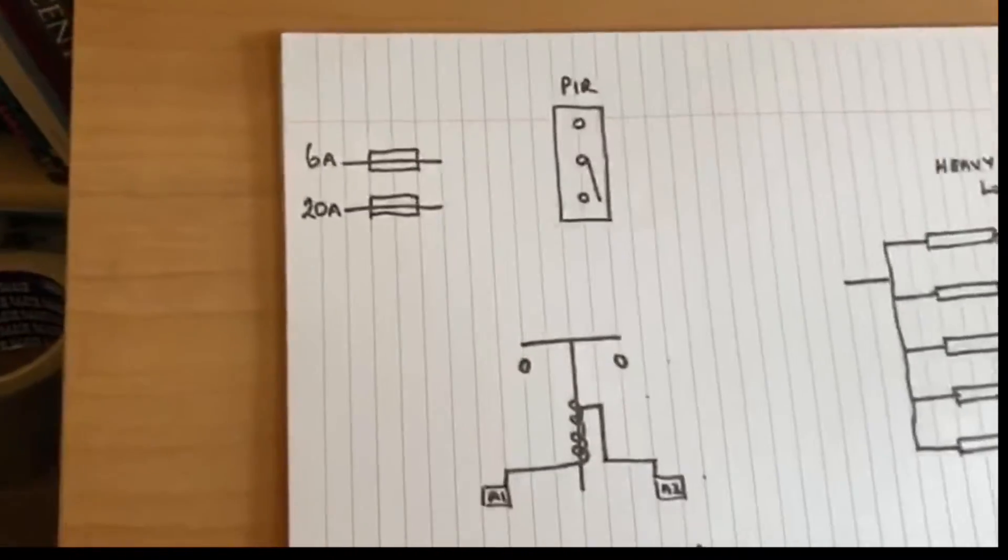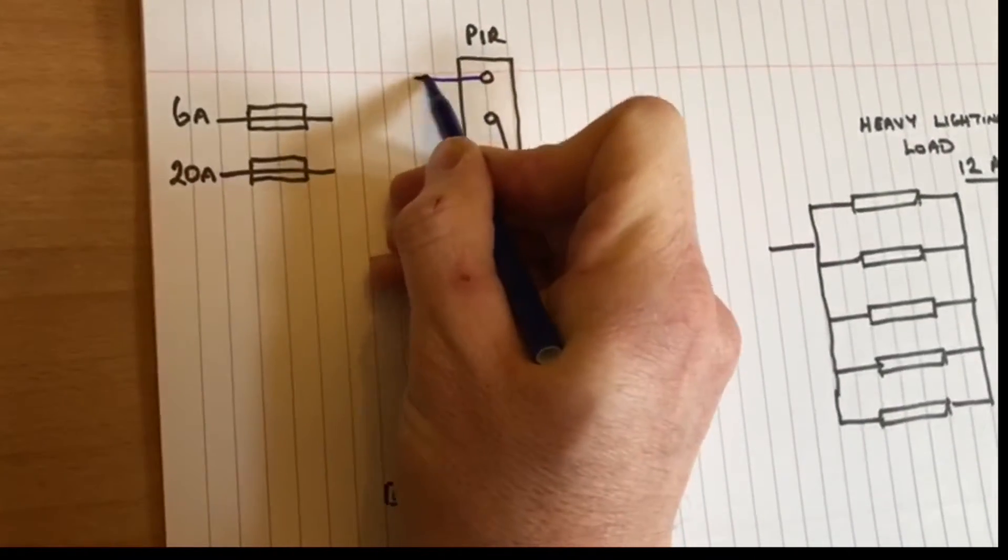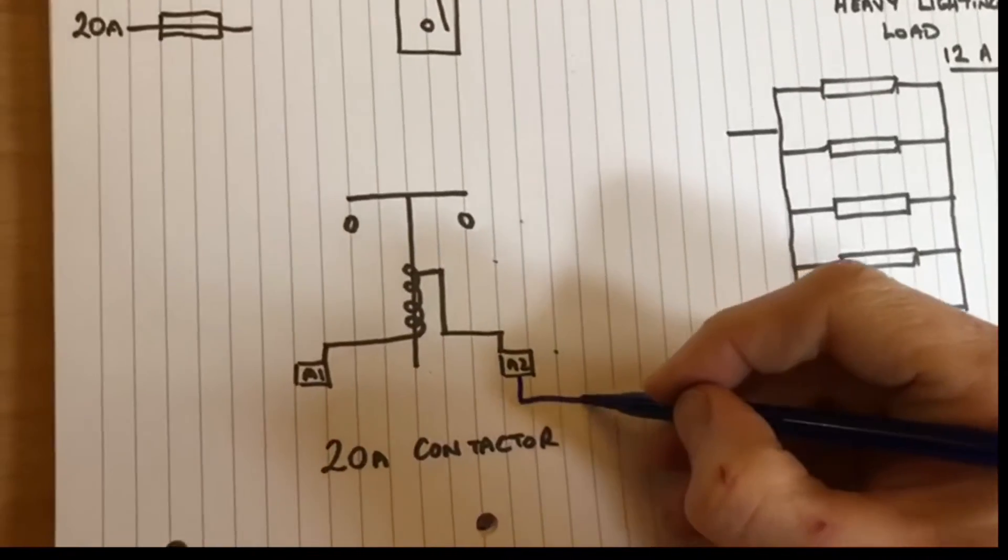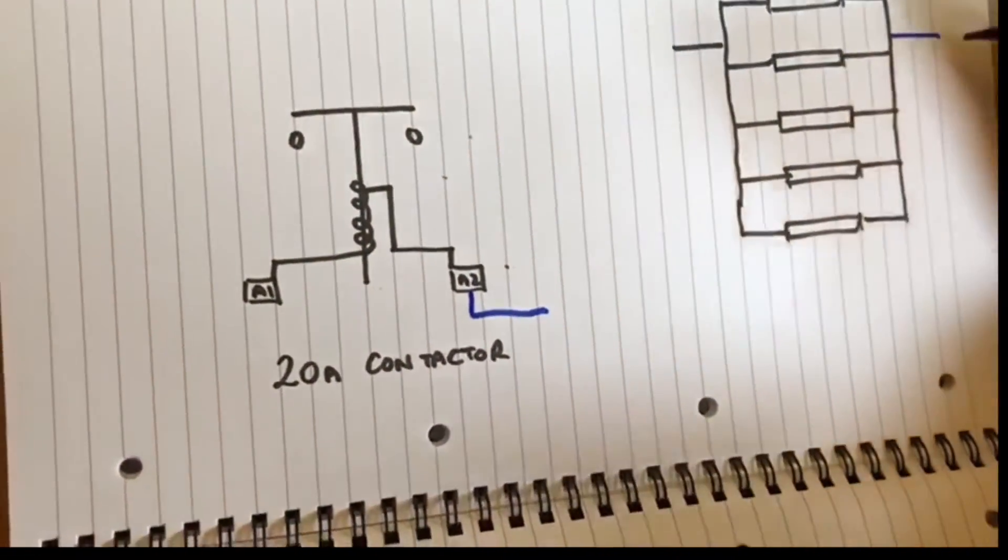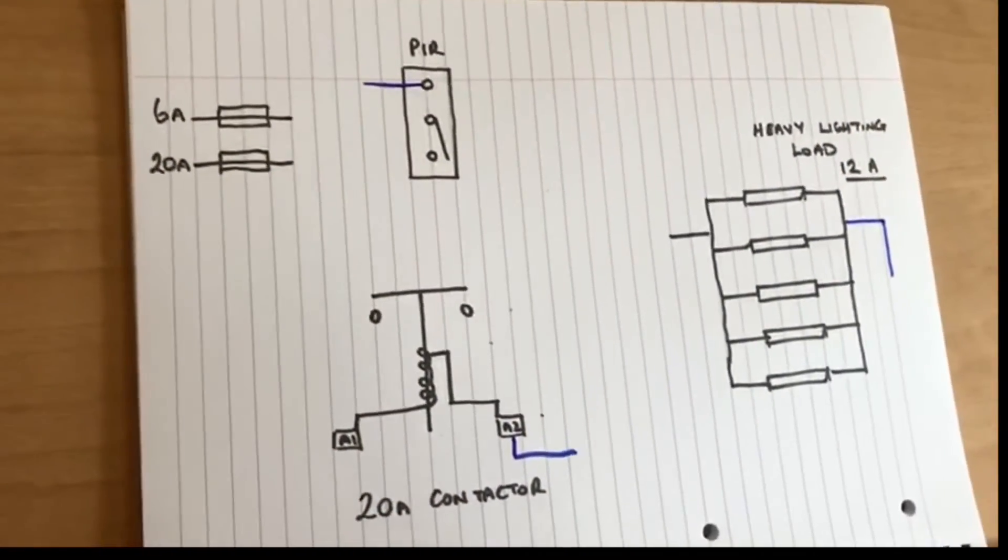So again, let's put our neutral connections in. Our neutral go into there, we had our neutral go into A2 of the coil, and we also had our neutral go into the lights.